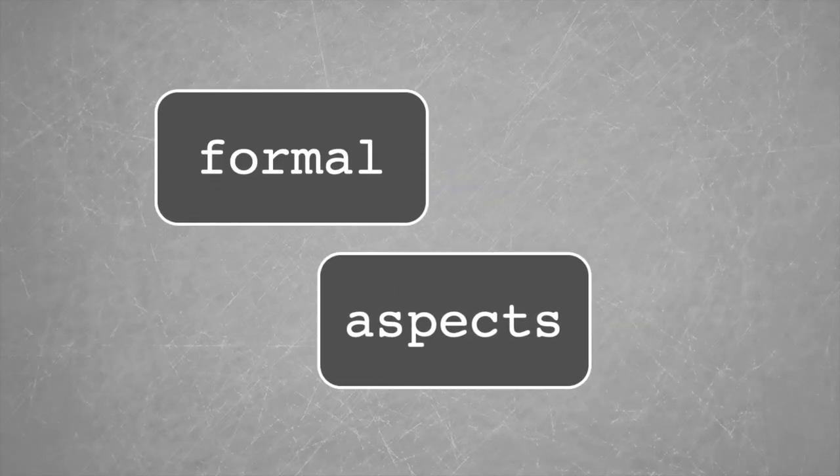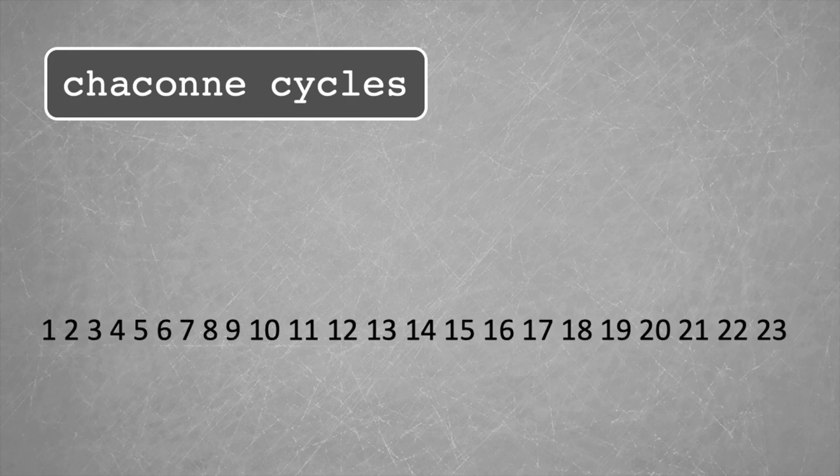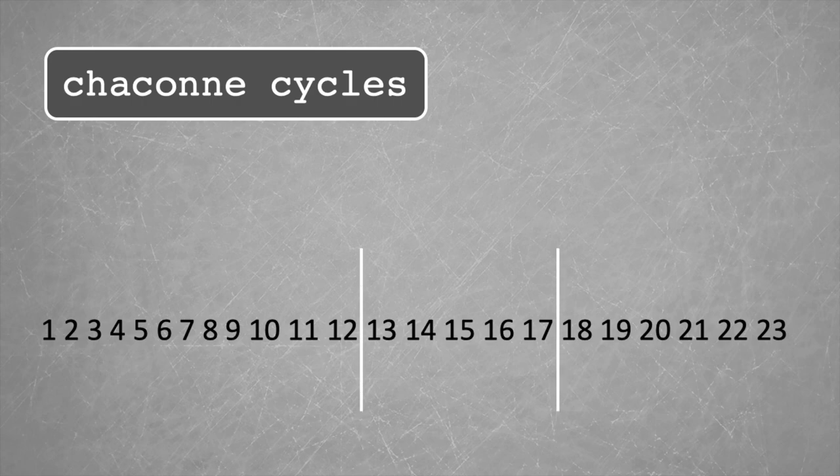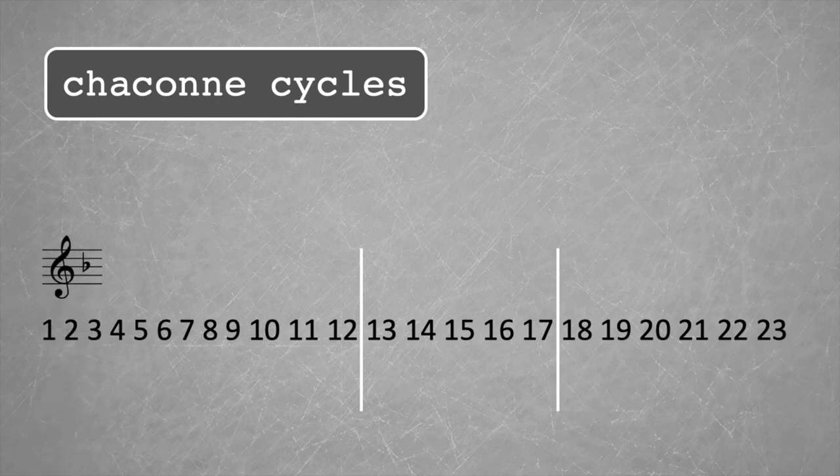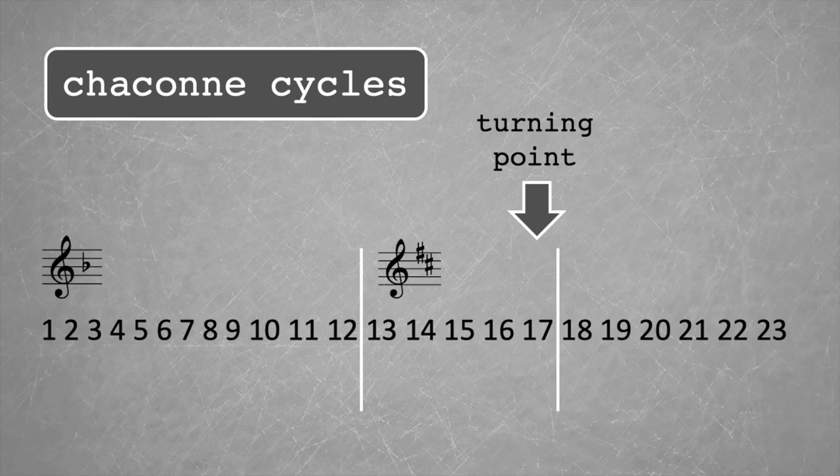To get a clear orientation about the chaconne, it's good to have a general impression of its form as I will pick out individual snippets to examine more closely. Weimann's improvisation encompasses a total of 23 cycles and can roughly be divided into 3 parts due to key relations. The longest phase consists of 12 cycles in D minor, then suddenly turns into D major for 5 cycles that culminate into a turning point, which leads back to 6 closing variations again in D minor.